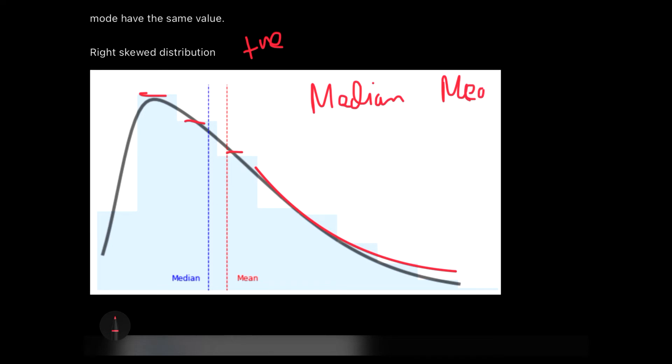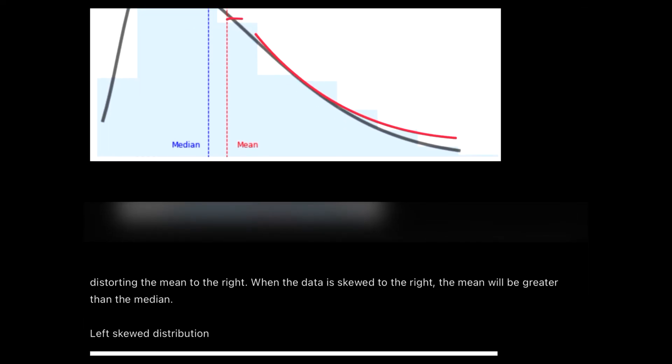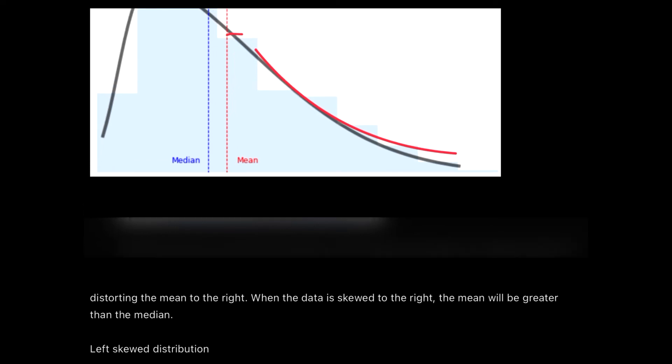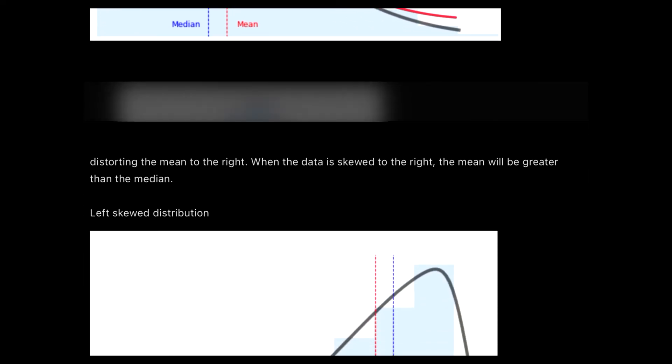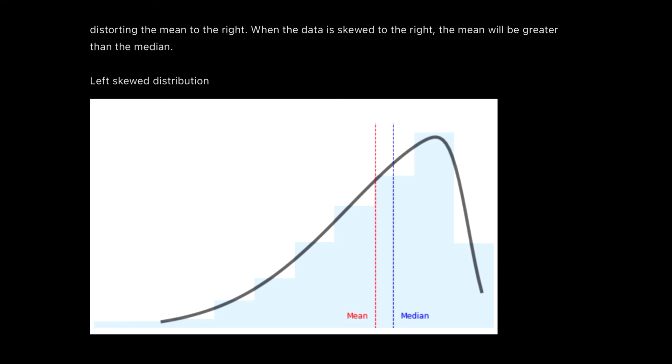And the thing which you need to note in this right skewed distribution is that the median comes before mean, and the mean is shifted to the right side. Can you make a guess that the value of mean will be more or less than the median? As far as you can see from the diagram, the mean's value will be greater than the median. In right skewed data, mean will be greater than the median.